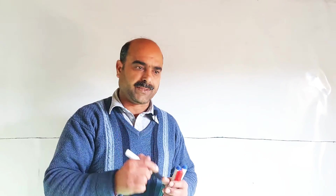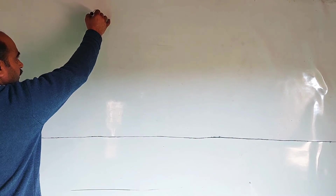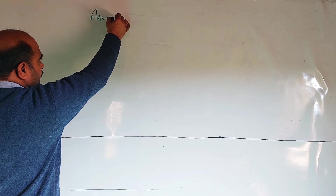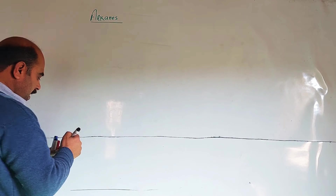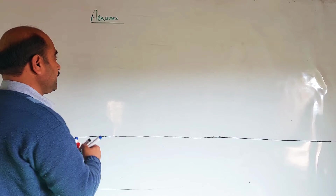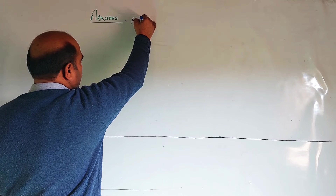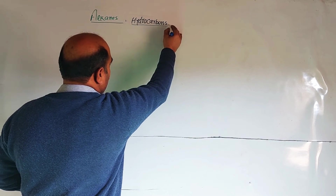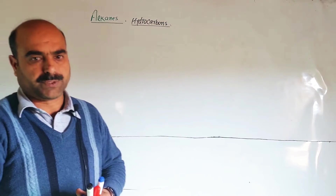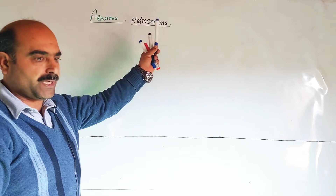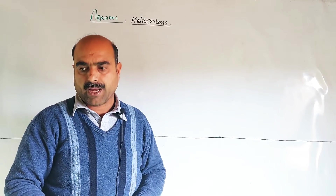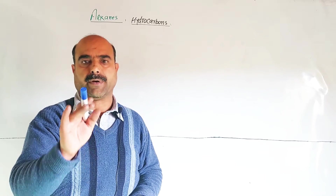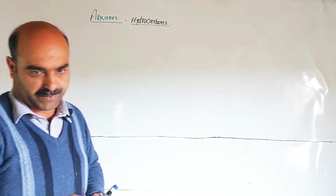New topic is alkanes. What are alkanes? Definition: alkanes are basically hydrocarbons. Hydrocarbons are those compounds which are composed of hydrogen and carbon elements only. Compounds containing carbon and hydrogen elements only are called hydrocarbons.